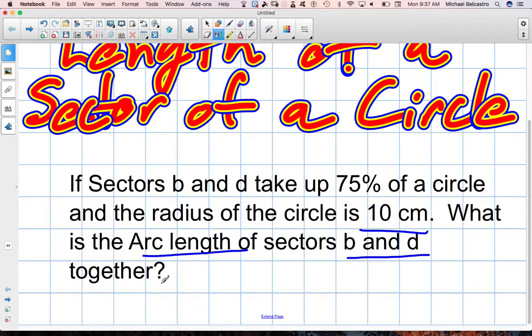Okay, so let's try to collate or synthesize this information, take out what's important. If sectors B and D take up 75%, so they're referring to two sectors, but they want them both in the end. So for all intents and purposes, this is really just a sector that we have to calculate. It takes up 75% of the circle, and the radius is 10 centimeters, that's important. We want to know the arc length in the end.